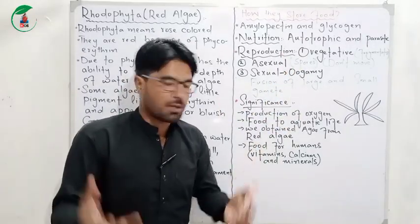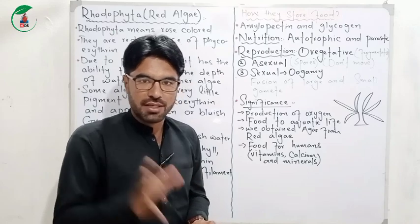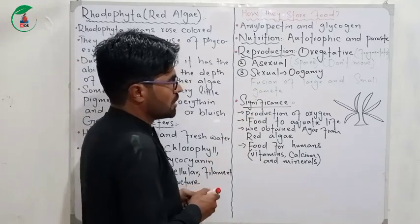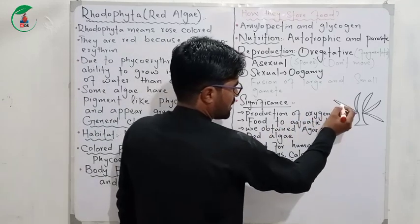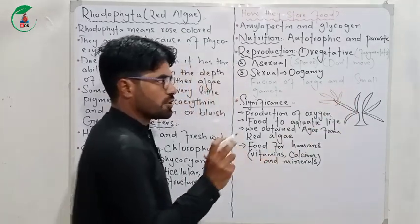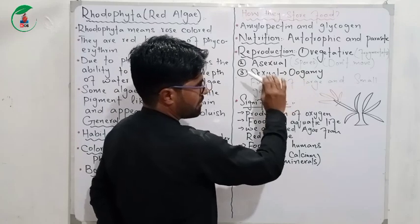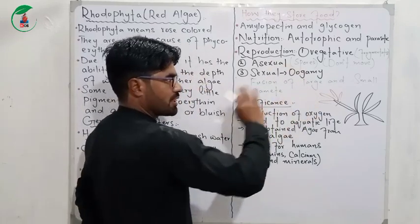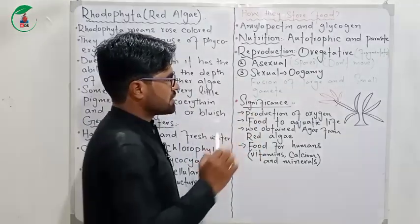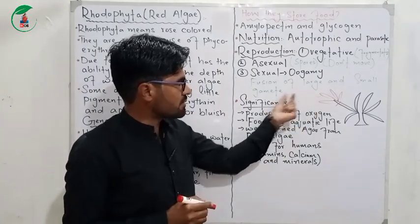When it comes to nutrition, red algae are autotrophic using chlorophyll, but can also be parasitic. Reproduction is very important. It includes vegetative reproduction, asexual reproduction through spores, and sexual reproduction using large or small gametes.